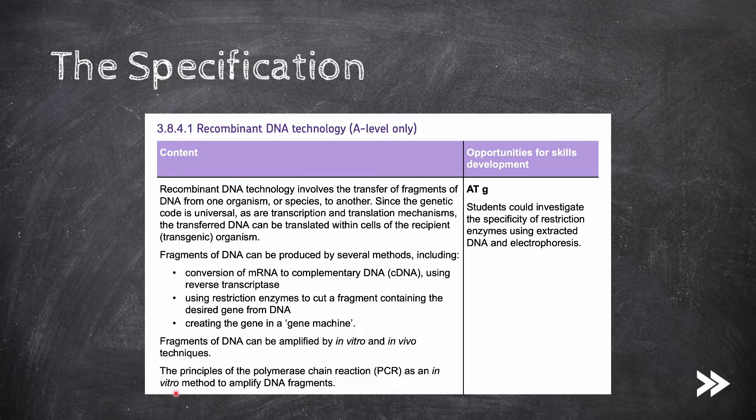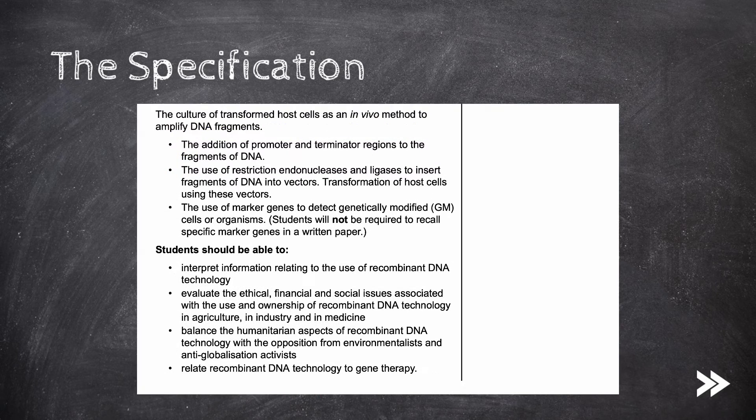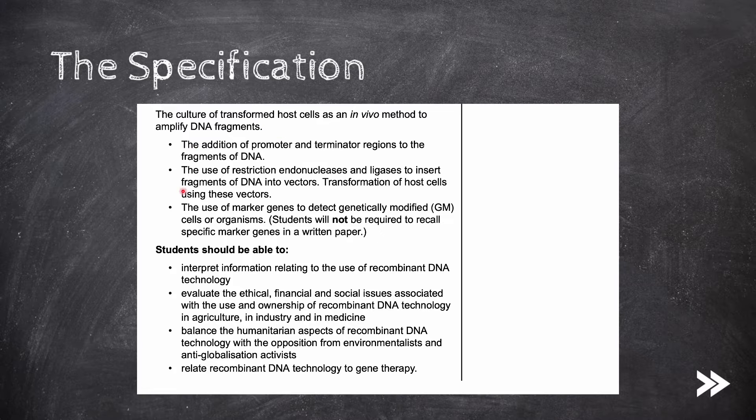We will also cover how DNA fragments can be amplified in vivo using a culture of transformed host cells. This involves a few steps, including the addition of promoter and terminator regions to the fragments of DNA, the use of restriction endonucleases and ligases to insert fragments of DNA into vectors, transformation of host cells using these vectors, as well as the use of marker genes to detect genetically modified cells or organisms. So let's make a start.